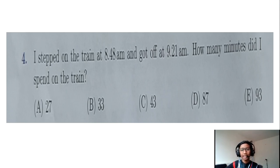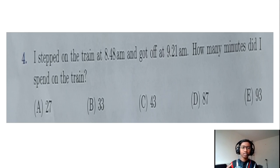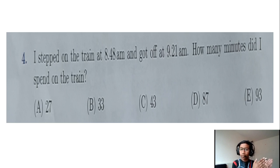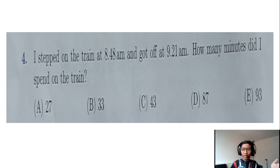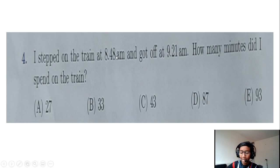Question number four: I stepped on the train at 8:48 AM and got off at 9:21 AM. How many minutes did I spend on the train? We can do this in two ways. The easiest way is to subtract 9:21 minus 8:48, which gives us the answer B, 33.